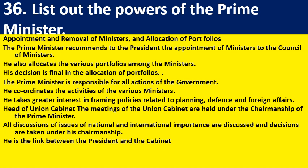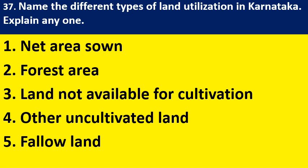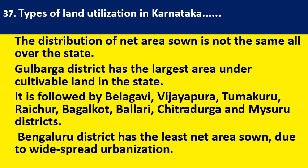Describe the powers of the Prime Minister. All the executive powers that the Prime Minister has — underline and prepare well. Name the different types of land utilization in Karnataka: net area sown, forest area, land not available for cultivation, other uncultivated land, fallow land. The net area sown is explained in the textbook, so you will get four out of four.